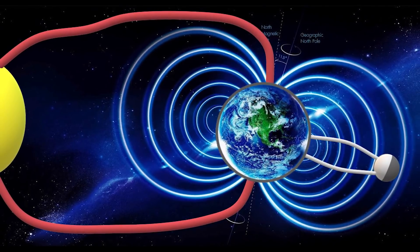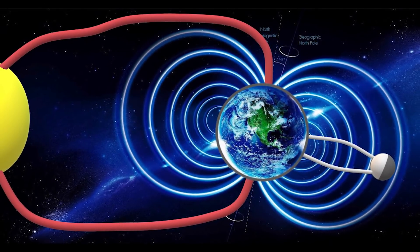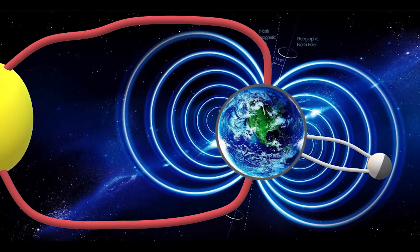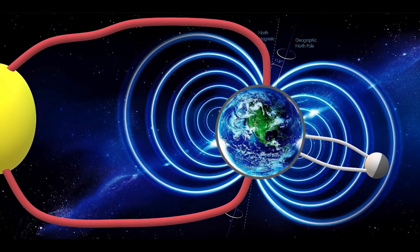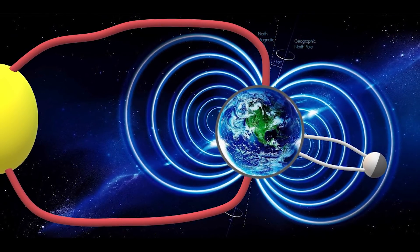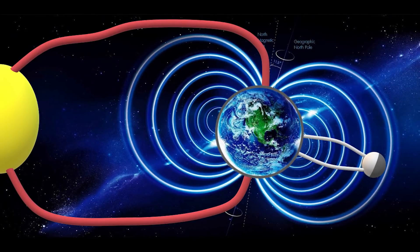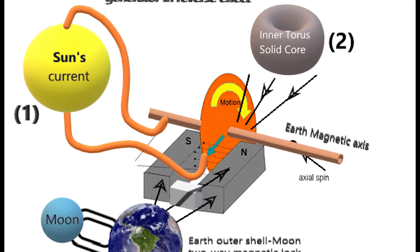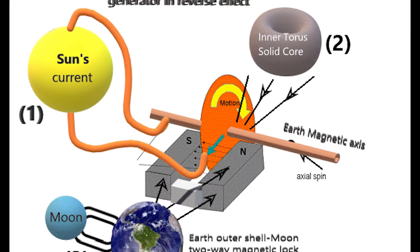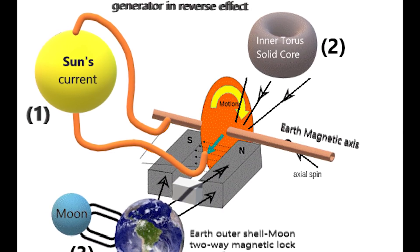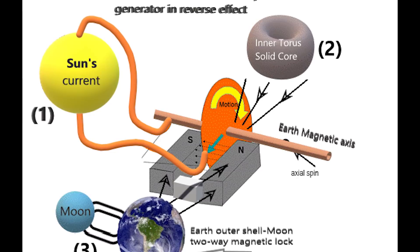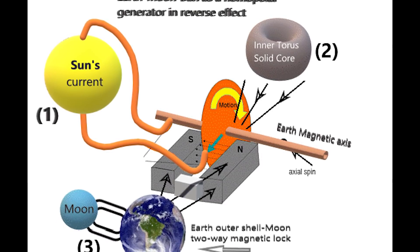The mechanism of the sun's electromagnetic cord current passing through the poles creates a Faraday homopolar generator effect in reverse on the planet's inner solid core in conjunction with the moon's two-way gravitational grip onto the mantle and crust. This homopolar generator effect induces a spin force onto the inner core of a planet.